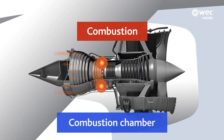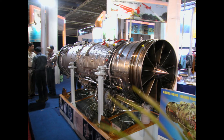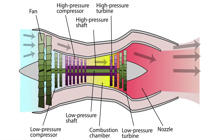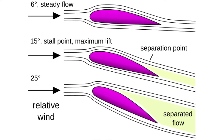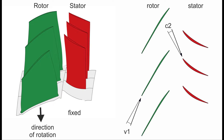One of the primary challenges faced by the Kaveri engine was achieving the desired performance levels. The compressor, which increases the pressure of incoming air, is essential for the engine's efficiency. However, the Kaveri engine encountered issues with compressor performance, particularly related to flow separation and surge. Flow separation occurs when the air deviates from the intended path, leading to decreased efficiency and potential engine instability. Surge, a condition where there is a rapid loss of airflow through the compressor, can cause significant performance problems and damage.